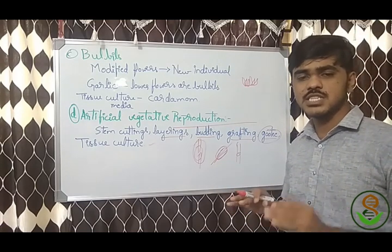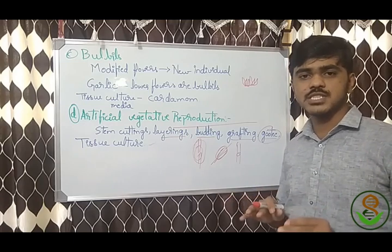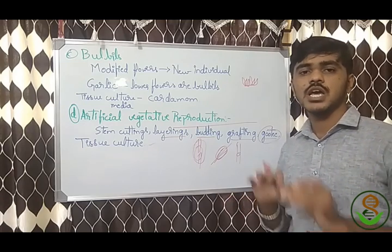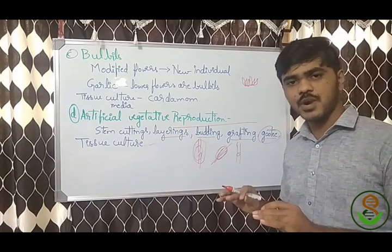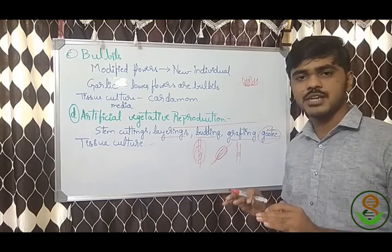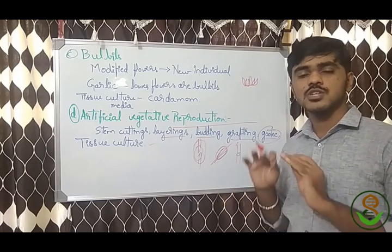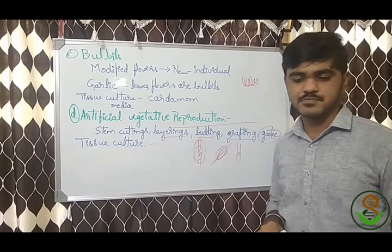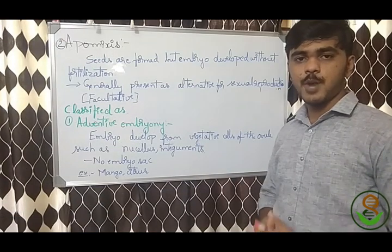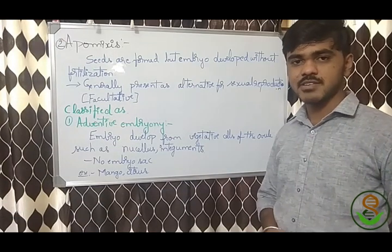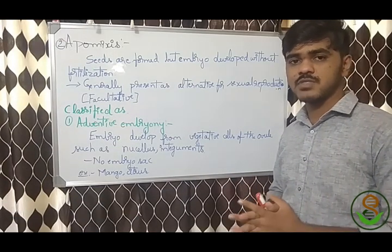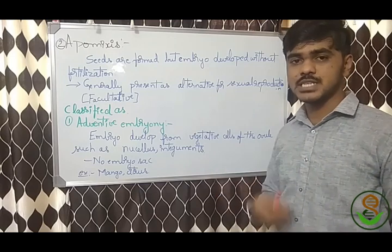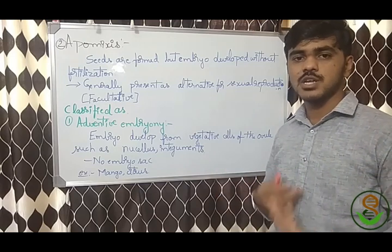Now we shall see apomixis — that is, reproducing from the reproductive part of the plant. Apomixis is asexual reproduction through the reproductive parts of the plant. As it is from the reproductive part, seeds develop, but without fertilization or the fusion of male and female gametes.